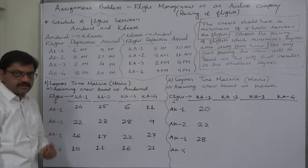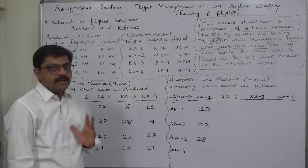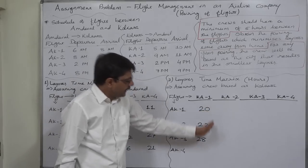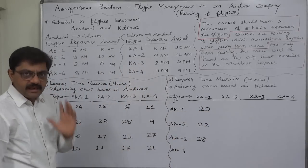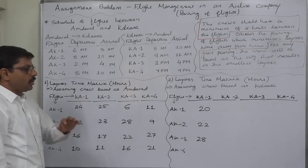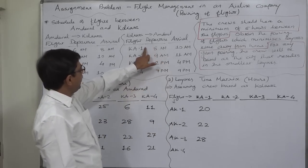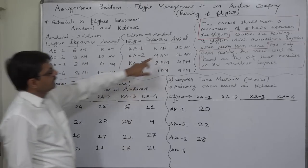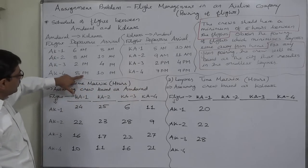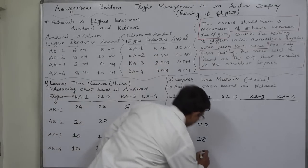The calculation of hours is not a simple thing; the explanation can only be given orally because it is not possible to write all the workings. So be careful in listening, and if necessary, watch these lectures more than once. If KA1 becomes AK4, it reaches Ahmedabad at 10 a.m. today and can again start from Ahmedabad to Kolkata at 8 p.m. today — 2 hours till 12 noon plus 8 hours — so the layover time will be only 10 hours.